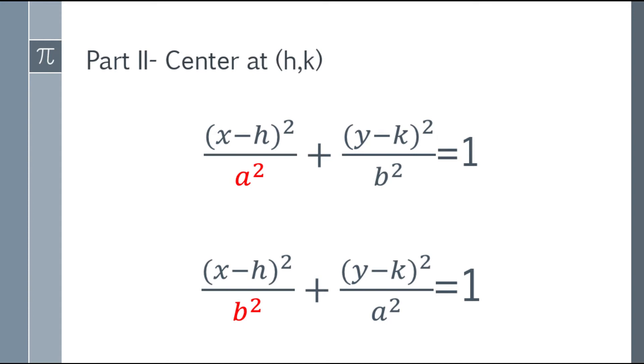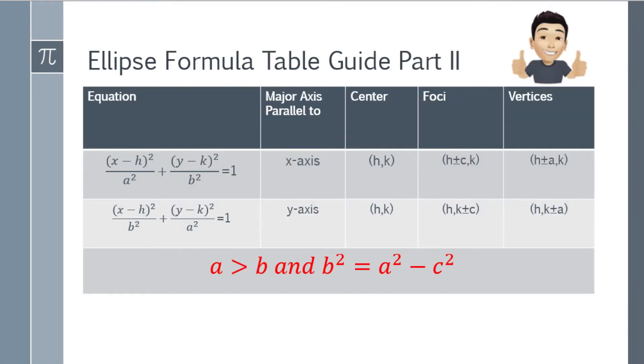The difference is where the a and b are located. We have the ellipse formula table guide. So notice that when a square is with x, the major axis is parallel to the x-axis and the center is h,k. The foci will be h plus minus c comma k. And the vertices will be h plus minus a comma k. When a square is with y, the major axis is parallel to the y-axis. And the center will be h,k. The foci will be h comma k plus minus c, and the vertices will be h comma k plus minus a.